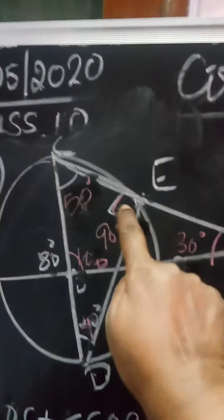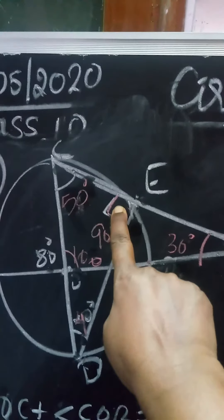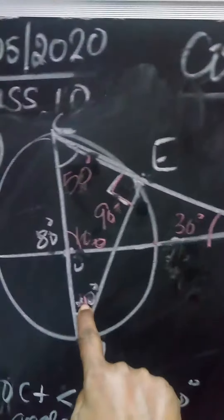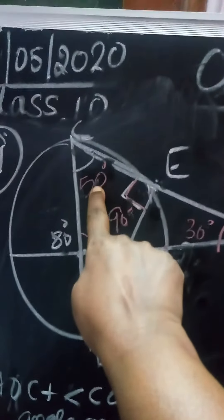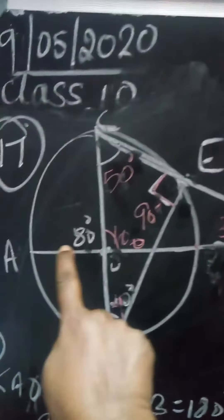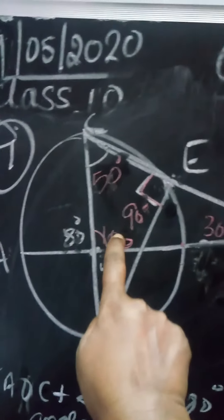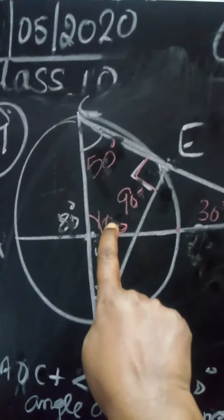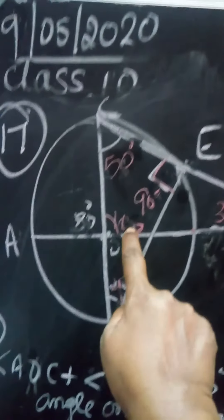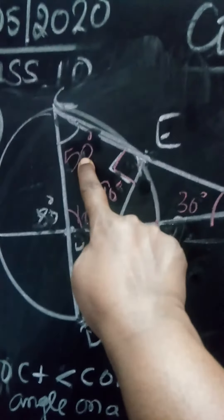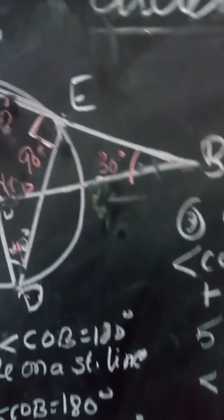To summarize: angle in the semicircle is 90 degrees. 90 plus 40 is 130, so 180 minus 130 gives 50 degrees — finishing the first triangle. Then using adjacent angles on a straight line: 80 degrees gives 100 degrees. In the next triangle, 100 plus 50 is 150, and 180 minus 150 is 30 degrees.